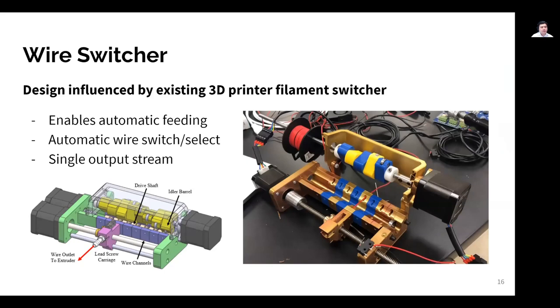Moving on to the wire switcher, the design of the wire switcher was also influenced by existing 3D printer filament switchers this time, and the wire switcher is capable of taking up to 8 different wire spools and selecting a single one of them to feed down through the extruder. Because there is only one outlet on the wire switcher, this greatly simplifies the wire path between the wire switcher and the rest of the machine.